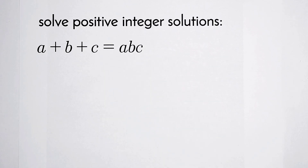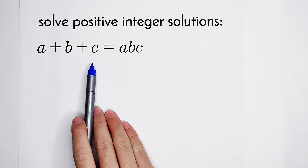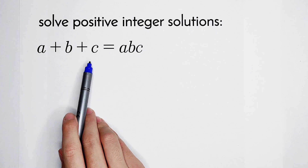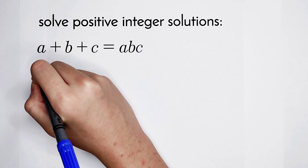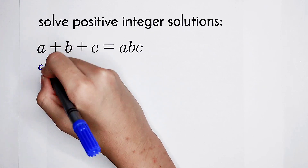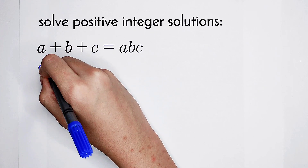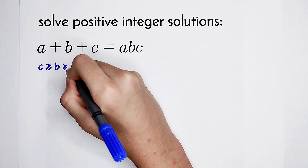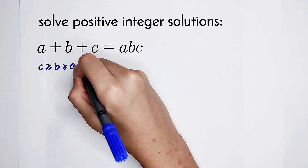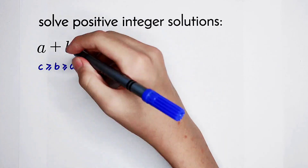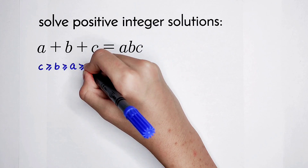Because of this, I'm going to sort A, B, and C — that means I'm going to impose an order. I'm going to let C be the greatest number: C is greater or equal to B, and B is greater or equal to A, and they are all positive integers, so they are all greater or equal to 1.